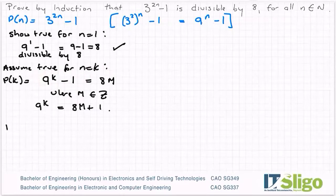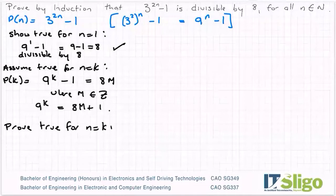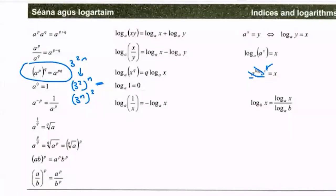So the last thing I want to do then is prove true for n = k+1. In this instance I am going to get 9^(k+1) - 1, and I would like to show that again that is divisible by 8. So I'm going to break this up again using the rules of indices.